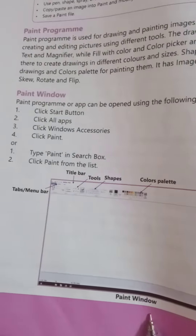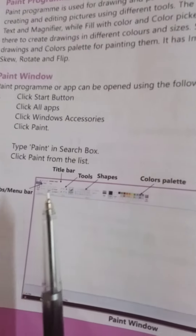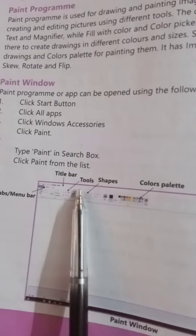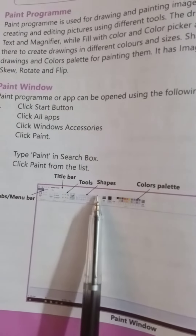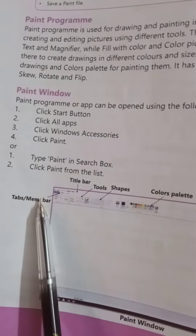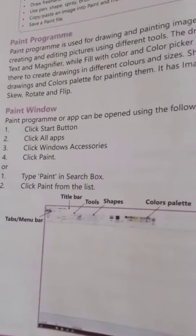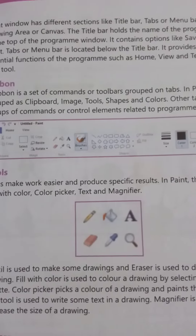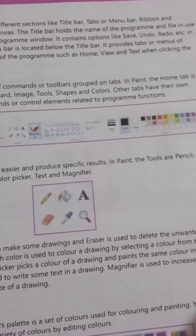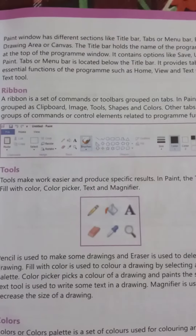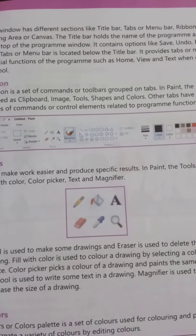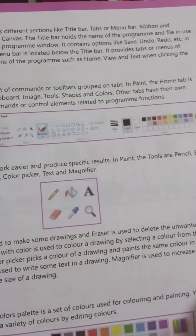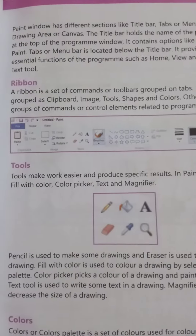Now look at the Paint window. It has the following things and tools: first, the title bar; next, we have tools, color palettes, and tabs and menus. The Paint window has different sections like the title bar, tabs, and the drawing area or canvas.